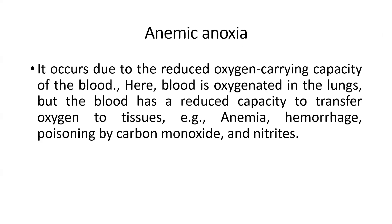The next type is anemic anoxia. Here the mechanism is different — it occurs due to reduced oxygen carrying capacity of the blood. Blood is oxygenated in the lungs, but the blood has a reduced capacity to transfer oxygen to the tissues. Examples include anemia, hemorrhage, and poisoning by carbon monoxide or nitrate.